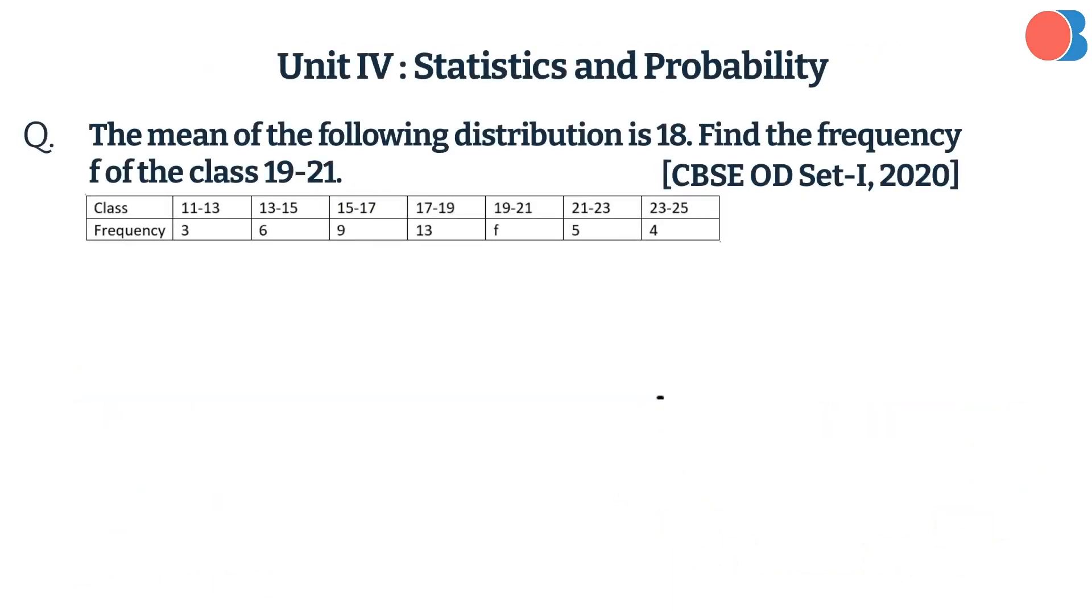The mean of the following distribution is 18. Find the frequency f of the class 19 to 21. Here is the answer.